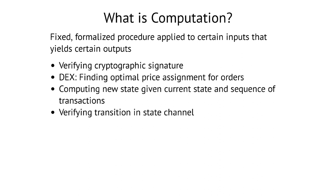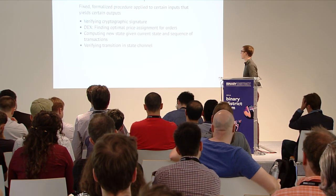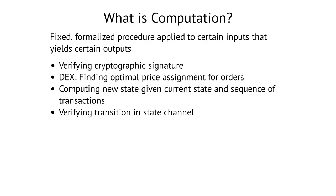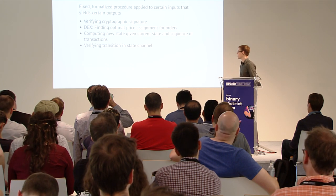Examples of computations are, of course, verifying cryptographic signatures, or in a decentralized exchange (DEX), finding an optimal price assignment for a given set of orders. When talking about blockchains or state channels, you have a given state of the blockchain, a sequence of transactions, and you apply those transactions to the state to get a new state — or verifying transitions in a state channel, which is basically the same thing.